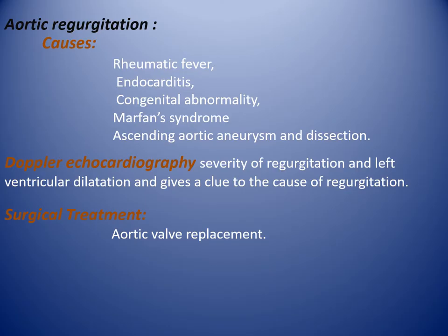Aortic regurgitation causes: rheumatic fever, endocarditis, congenital abnormality, Marfan syndrome, ascending aortic aneurysm, and aortic dissection. Doppler echocardiography assesses the severity of regurgitation, left ventricular dilatation, and gives clues to the cause of regurgitation.